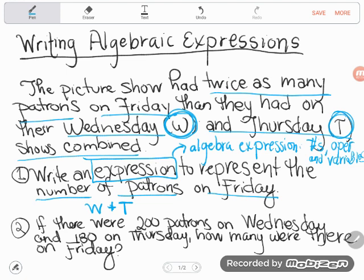Be careful though, because it says the picture show had twice as many patrons on Friday than they had on Wednesday and Thursday combined. Twice as many means to multiply by two. I'm going to use parentheses, super important, around W plus T so everybody knows to combine them first, and then I'm going to put a two out here against the parentheses to say after you combine them, multiply what you get by two. What I have here is an expression to represent the number of patrons on Friday.